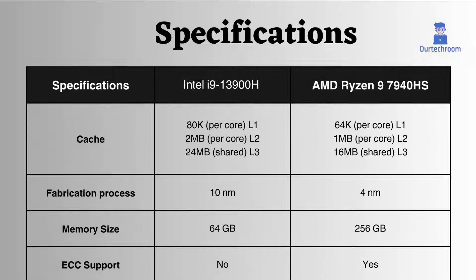In all cache levels, the Intel i9-13900H has more cache, so it is better at storing frequently accessed data, which helps in improving performance.